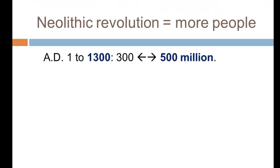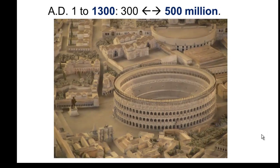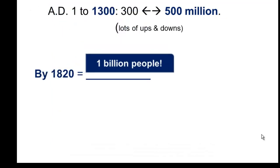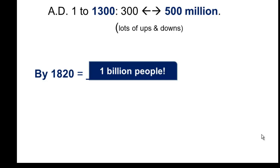Then came the Neolithic Revolution and more people. Leaping forward quickly, from the beginning of the Christian era up to about AD 1300, the global population fluctuated somewhere between 300 and 500 million, with lots of ups and downs due to epidemics, wars, and the collapse of civilizations — including the rise and fall of Rome.